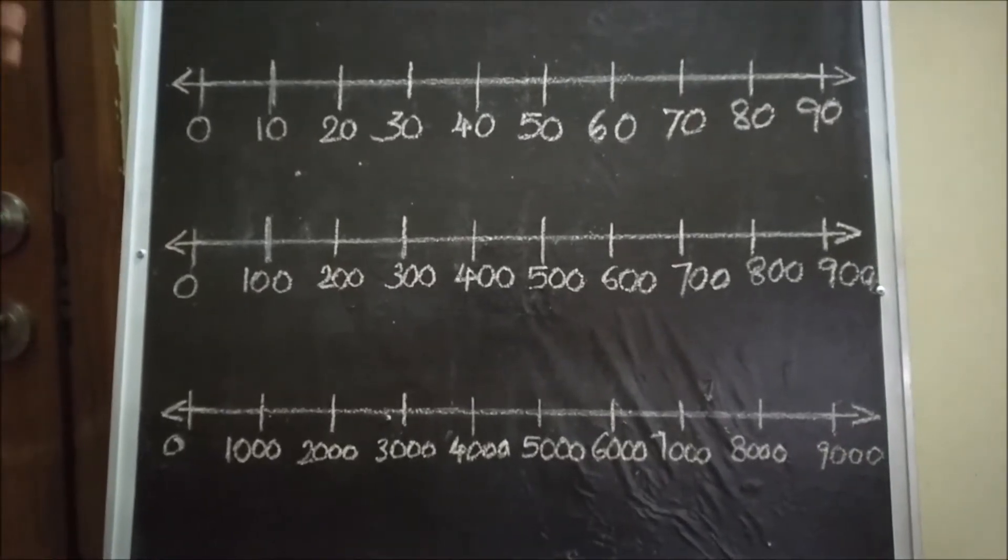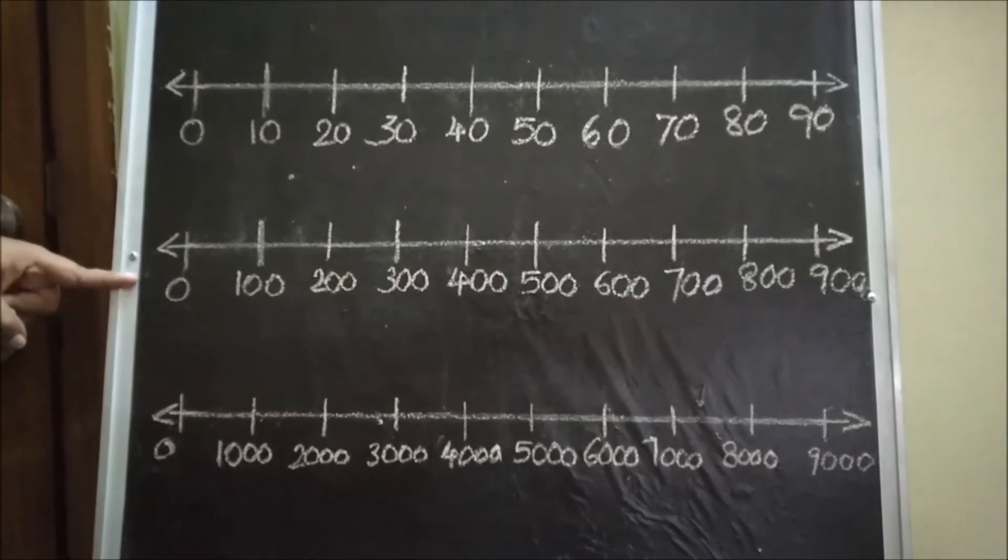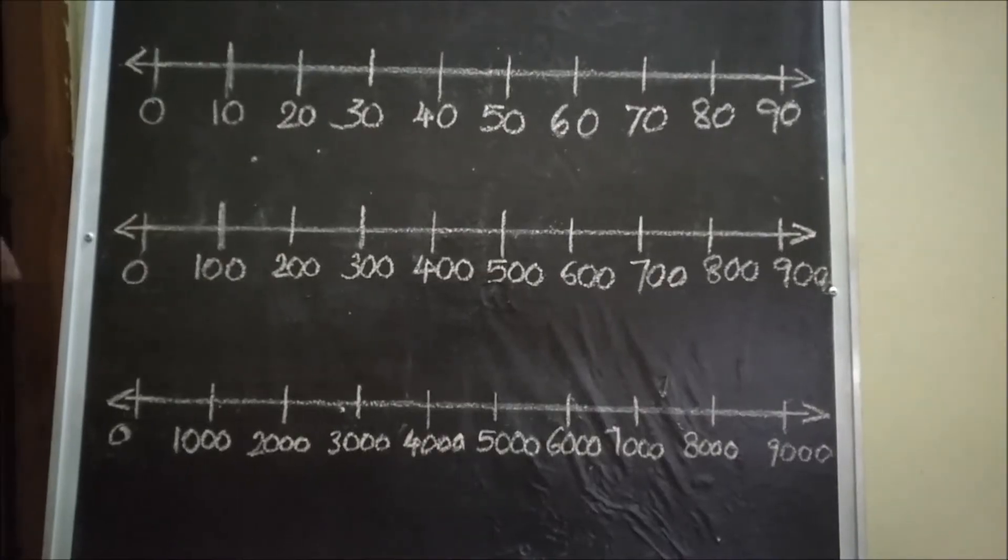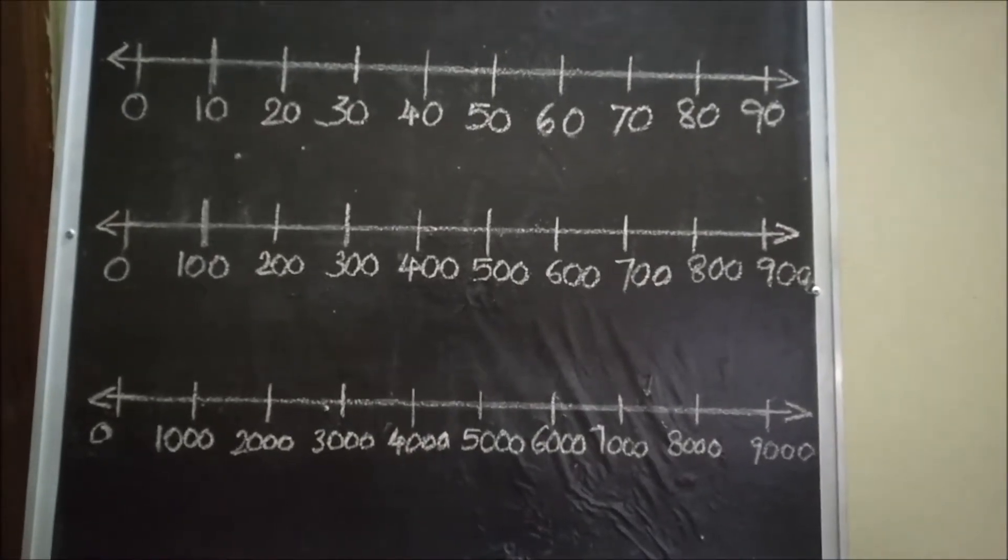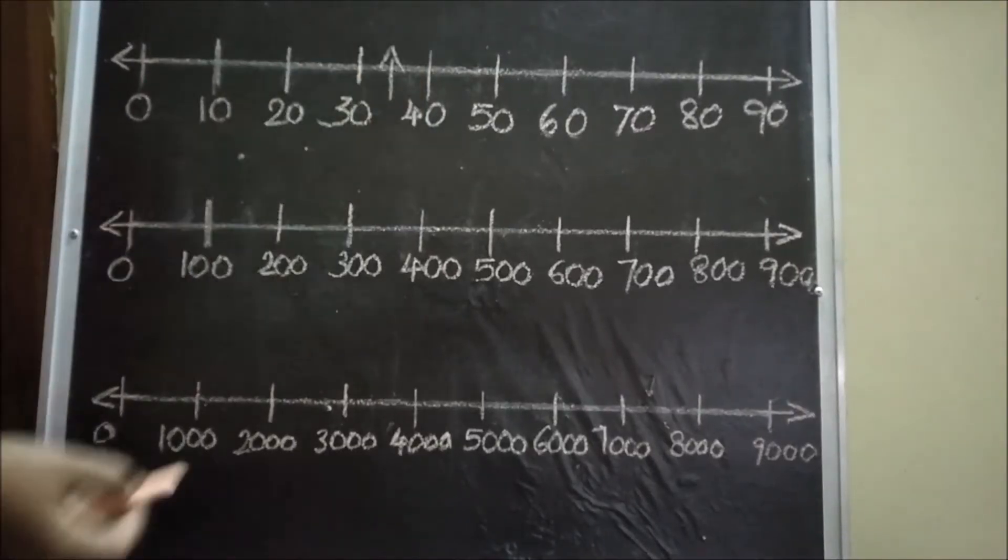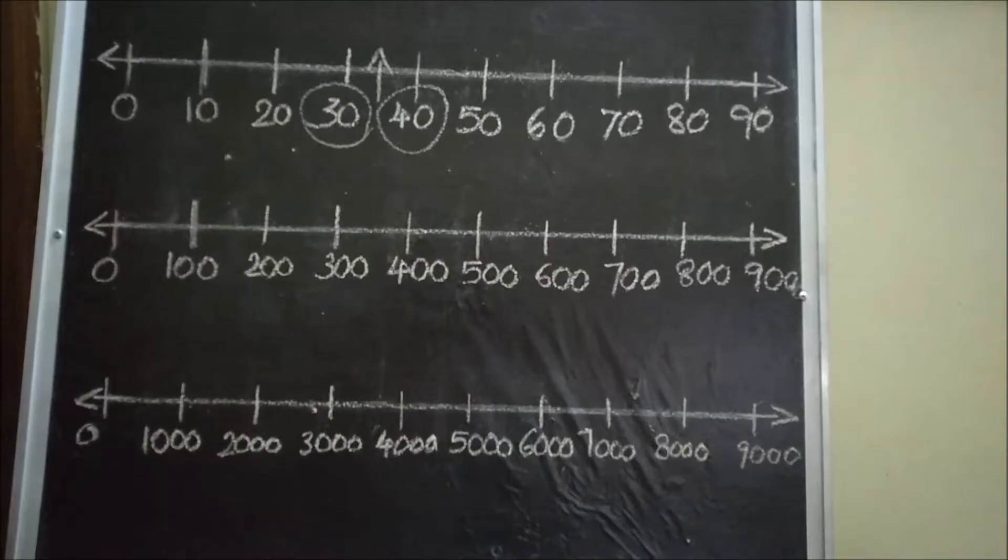Here, on number lines, I have written multiples of ten, multiples of hundred, and multiples of thousand. When we estimate a number which is in between 30 and 40, it can become 30 or 40.